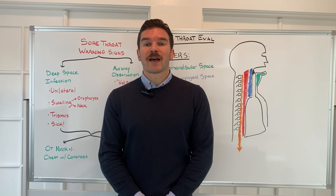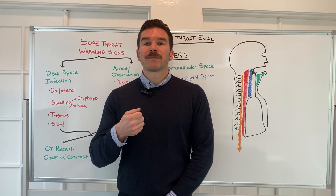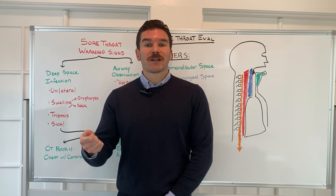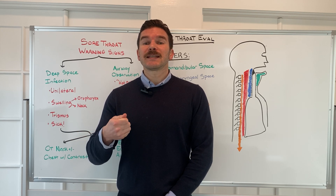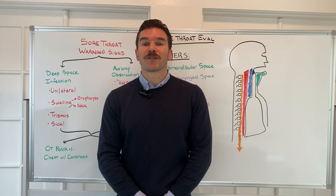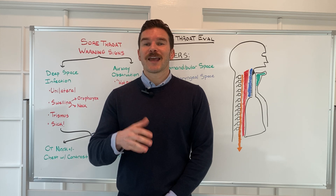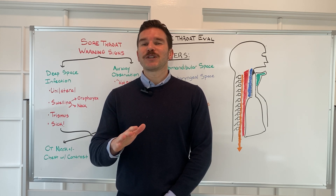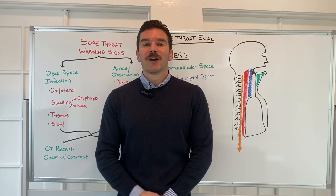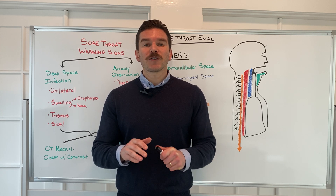We're going to talk about what some of the warning signs and symptoms are that clue us into the fact that this patient's sore throat isn't actually a run-of-the-mill sore throat, but one signifying a more sinister underlying disease process. To do that, we're going to talk about two foods: onions and potatoes. By the end of these next 10 minutes, you'll have a clear idea of what that means.